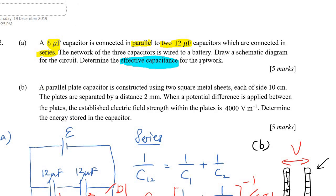The next question. A parallel plate capacitor is constructed with 2 square metal sheets. It's important. This is a square metal sheet. Each of side 10 cm. They are separated by a distance 2 mm.